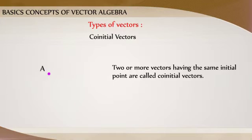Co-initial Vectors: Two or more vectors having the same initial point are called co-initial vectors.